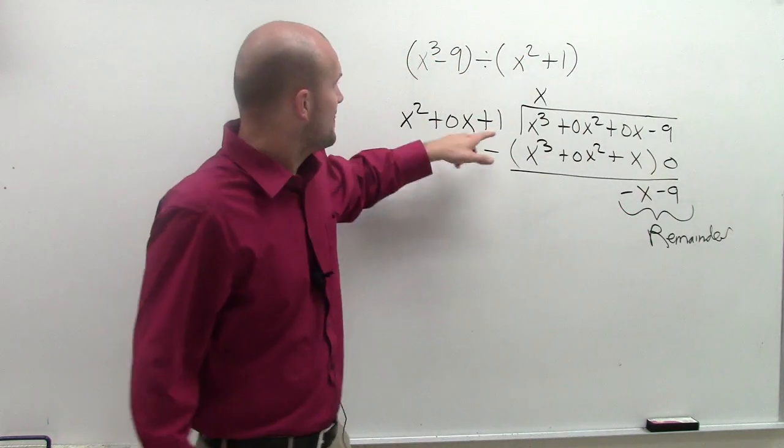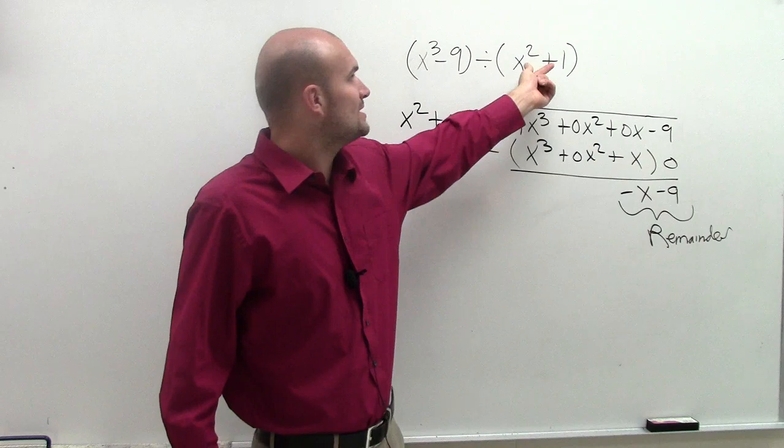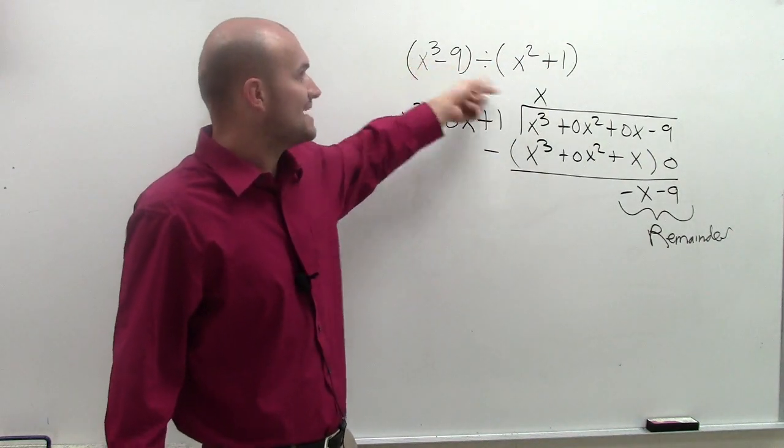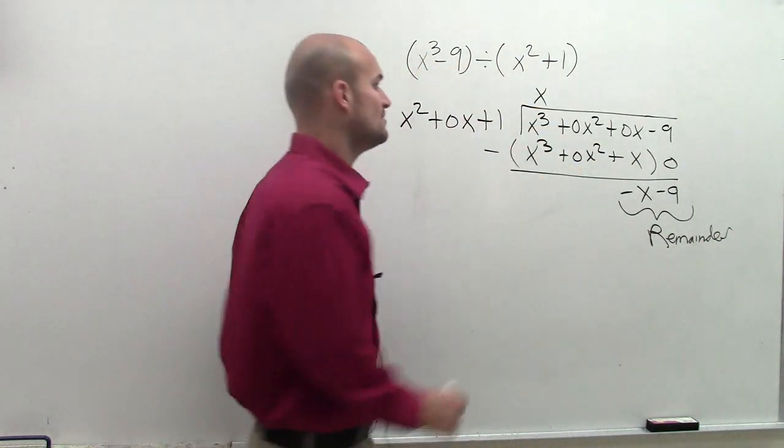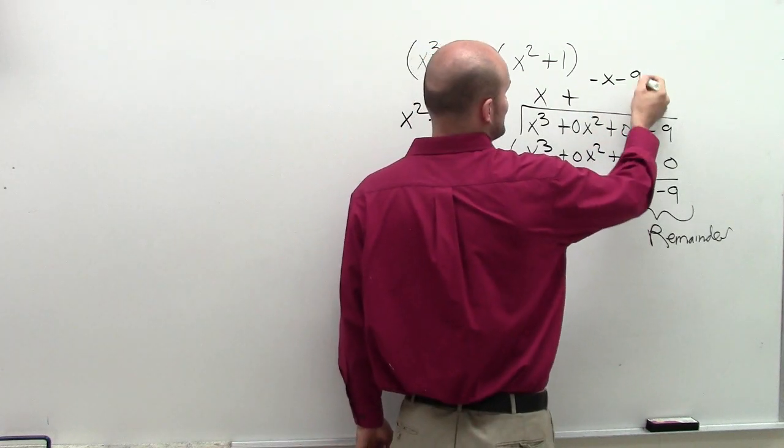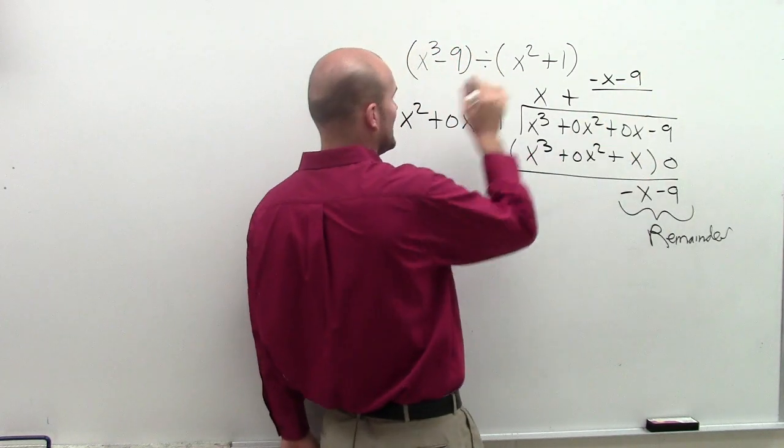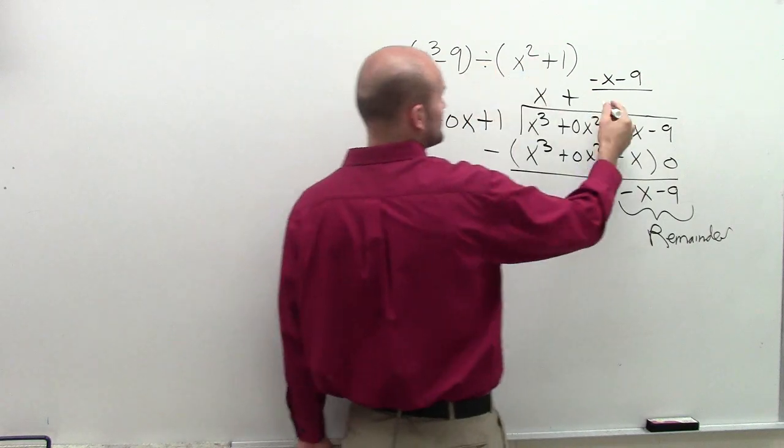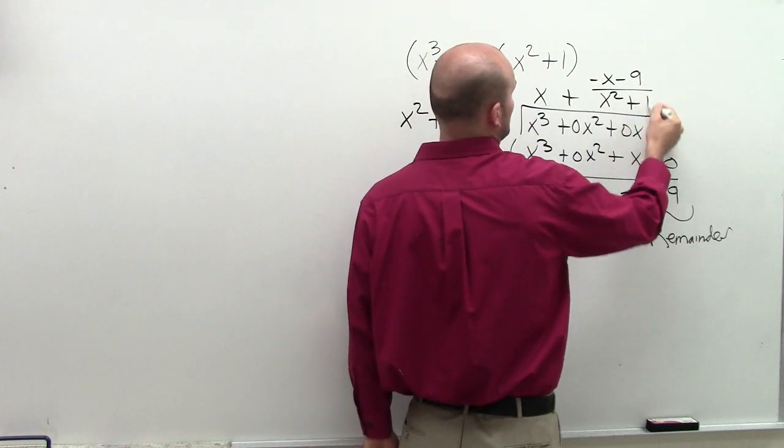right? So that means that x squared plus 1 divides into x cubed minus 9 x times with the remainder. I'm just going to add negative x minus 9. You take your remainder and divide it by your divisor, which is x squared plus 1.